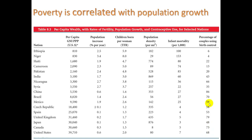That highest number is 86% in China, where of course they would have incentive to only have one child. So there's a pattern here — all of these numbers decrease, except for the last column, as income increases.